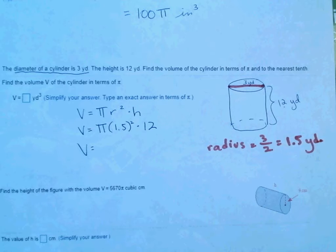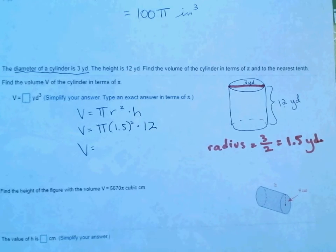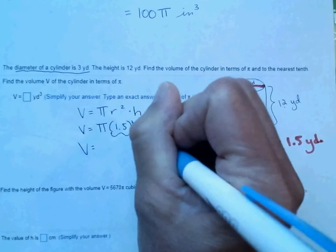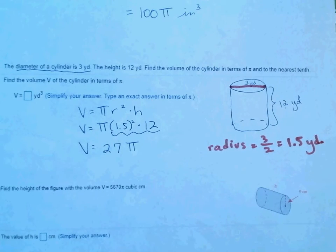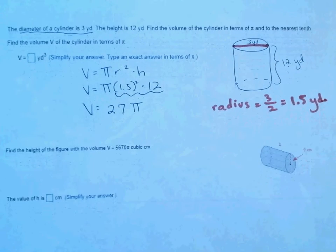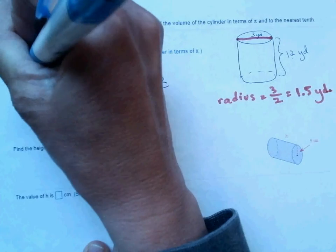Okay, and now you would leave the pi off, and type in 1.5 squared times 12, these numbers here. And that gives you 27, so your answer is 27 pi. Alright, that would go in the blank up here.